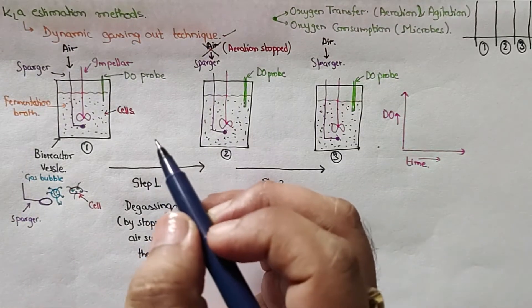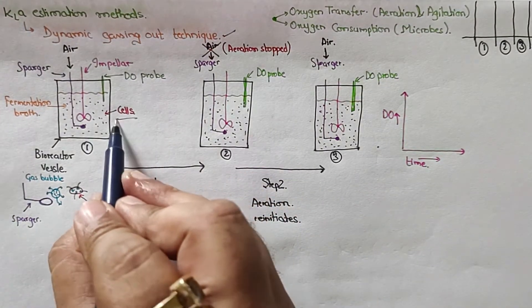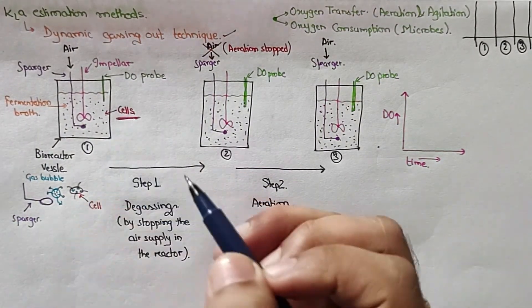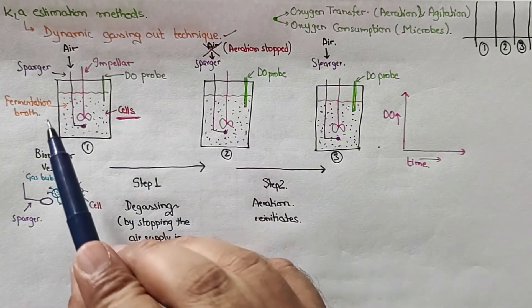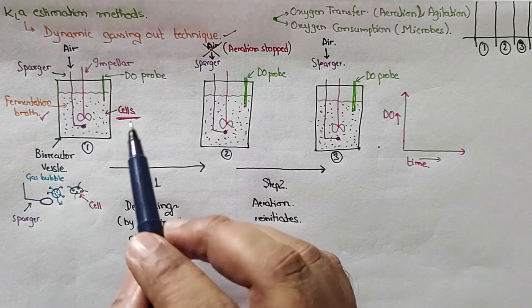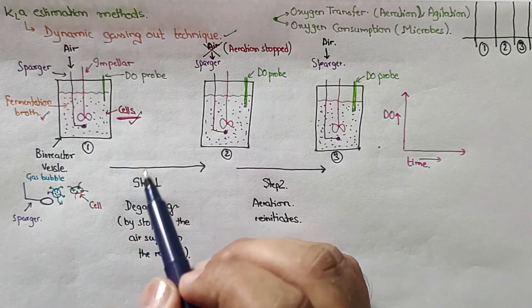The first and most striking difference is the use of cells in this system. In the static method we did not use cells, only the fermentation broth was used, but here the cells are being used.